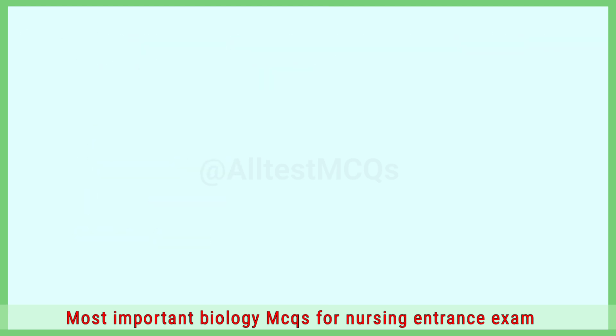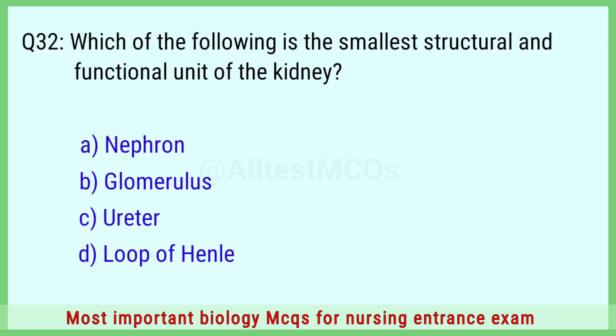Question number 32: Which of the following is the smallest structural and functional unit of the kidney? The right answer is option A: nephron.